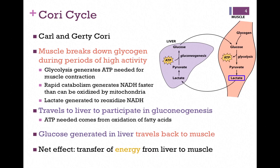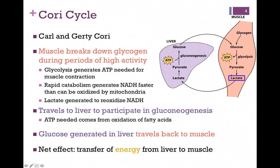Let's look at one of these cycles — it's called the Cori cycle, named after Carl and Gertie Cori. In this cycle, we begin with the muscle in our figure on the far right. It's going to break down glycogen to produce glucose during periods of high activity, and it will utilize the pathway of glycolysis to convert that to pyruvate, which will be its energy source to produce ATP. Rapid catabolism generates NADH through glycolysis faster than it can be oxidized by mitochondria.